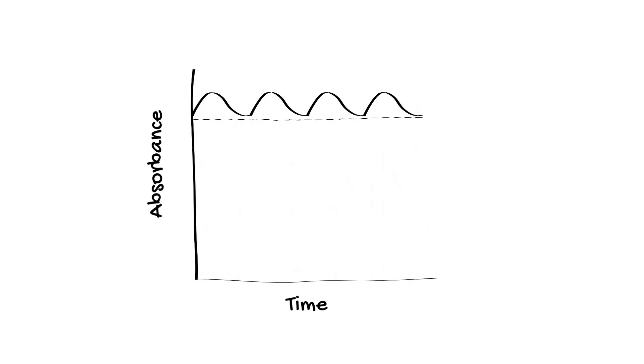We do this by assessing the AC or pulsatile component of the signal compared to the ratio of DC or non-pulsatile component of the signal. We do this for both 660 nanometer and 940 nanometer light wavelengths.